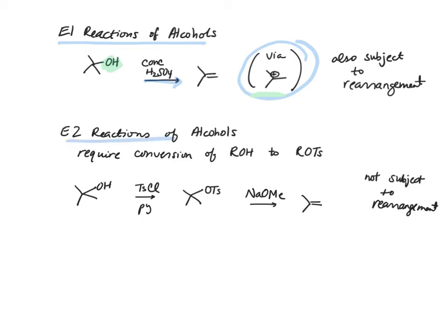E2 reactions of alcohol require first the conversion of the alcohol to a tosylate, and you already know that we do that with tosyl chloride pyridine. And then now that we've got our good leaving group, we can use a strong base that's a good nucleophile to accomplish a one-step E2 mechanism. Note that because we don't have a carbocation, this is not subject to rearrangement.